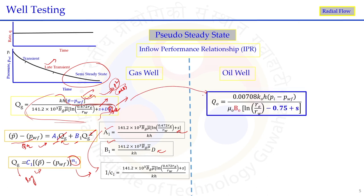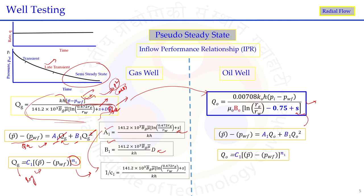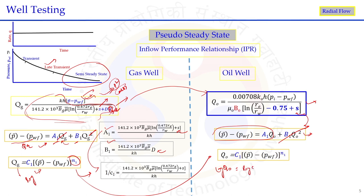The IPR equation for the oil well under pseudo steady state condition is analogous to the gas well. This equation includes the skin effect; if non-Darcy effect is considered, a quadratic term is added. The back pressure equation in log form — log(Q_o) = log(c1) + n1·log(ΔP) — gives linearity on a log-log scale, with slope and intercept yielding parameters a1, b1 or c1 and n1 that characterize the reservoir. This is the way pseudo steady state and pressure transient analyses are performed for oil wells.